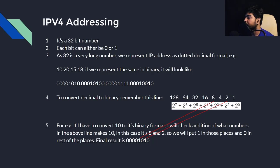So what do I mean by bit? The lowest unit of memory that our computer understands is a bit. A bit can store either a zero or a one, so there are only two numbers possible with one bit — it's either zero or one.